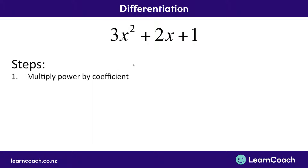The first step is multiplying every power by its coefficient. In this case, 2 is the power and 3 is the coefficient. A coefficient just means the number that comes before — so it would be the number before the x squared, or the x, or the x to the power of 3. Multiplying those two together gives us 6.